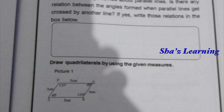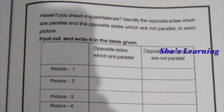Next, draw quadrilaterals using the given measures. If you have studied quadrilaterals, you will learn about 4 quadrilaterals. Identify the opposite sides which are parallel and the opposite sides which are not parallel.